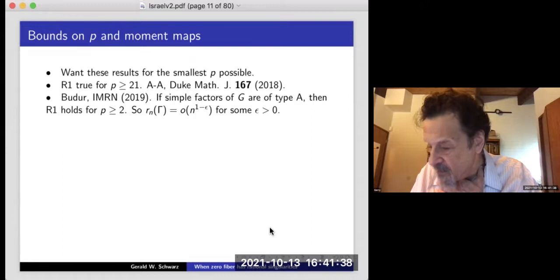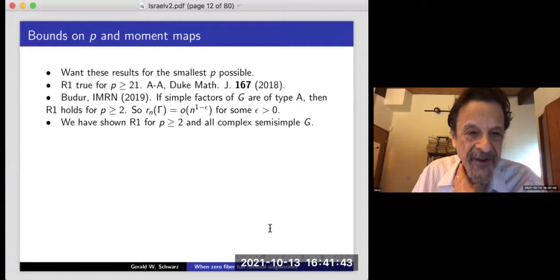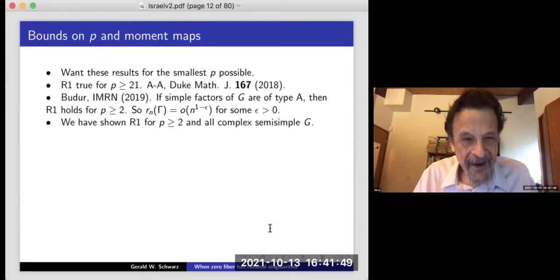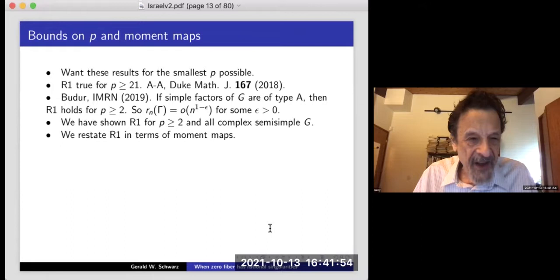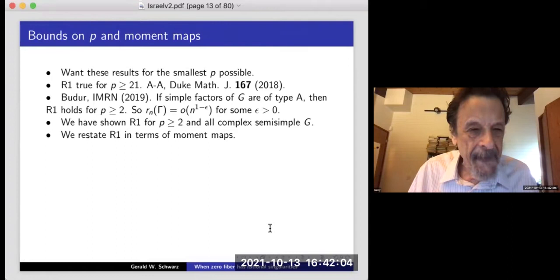We have shown R1 for p ≥ 2 for all complex semisimple G. That's our main contribution. We prove this by restating the condition R1 — that the tangent cone of the representation variety has rational singularities — in terms of moment maps.